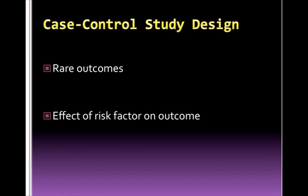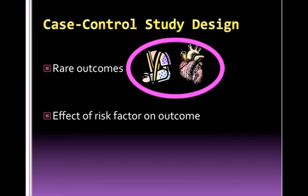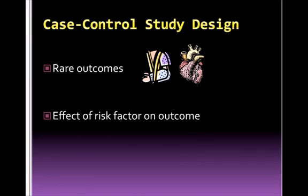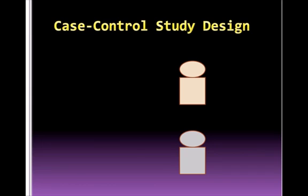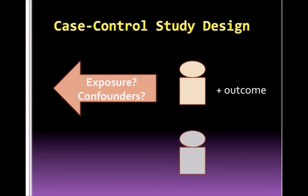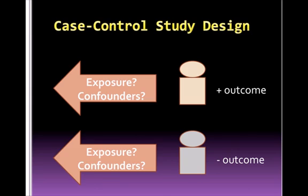Let's further examine this case control study. This type of study is very useful for studying rare outcomes such as fractures or cardiovascular events. Because the outcome has already occurred, the focus of the study is the presence or absence of a predetermined risk factor or factors, such as immobility for fracture or poor diet for cardiovascular events. Case control studies are used to assess risk factors for disease. They are retrospective because the outcomes have already occurred, and they are hypothesis generating.